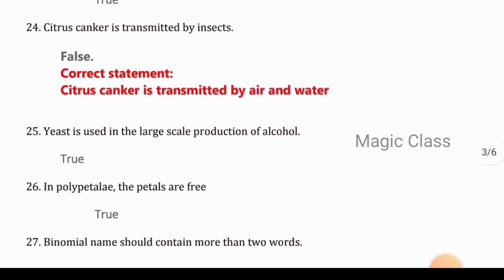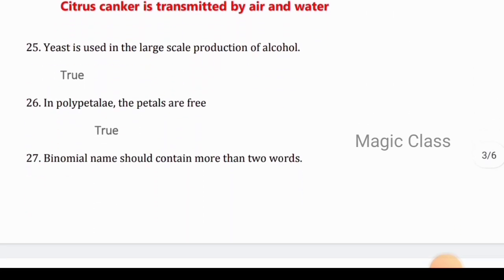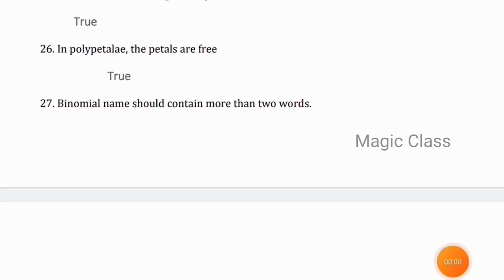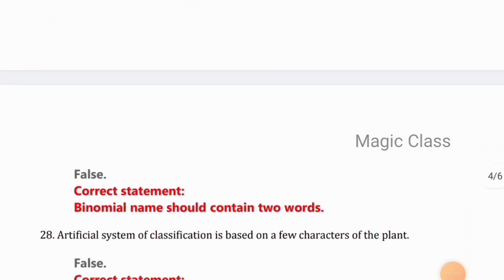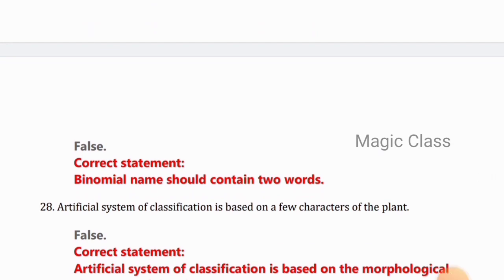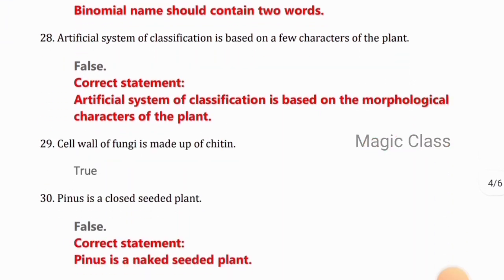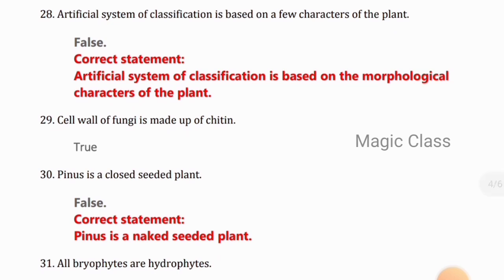Question 25: Yeast is used in the large-scale production of alcohol. True. Question 26: In flower inflorescence the petals are free. True. Question 27: Binomial name should contain more than two words. False, because it should contain two words. Question 28: Artificial system of classification is based on few characters of the plant. False.